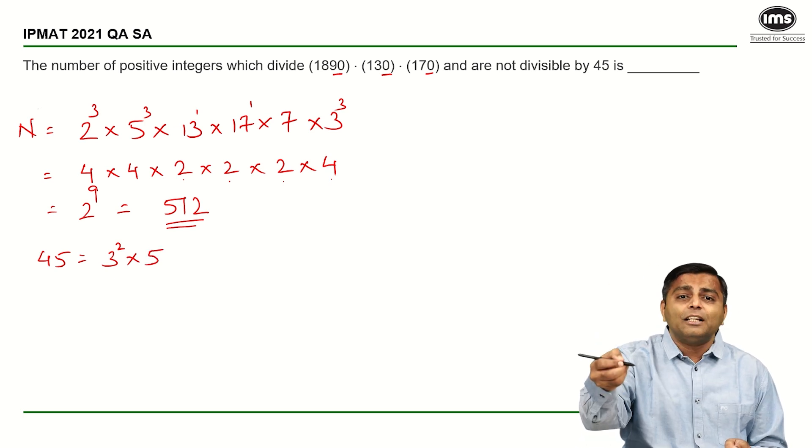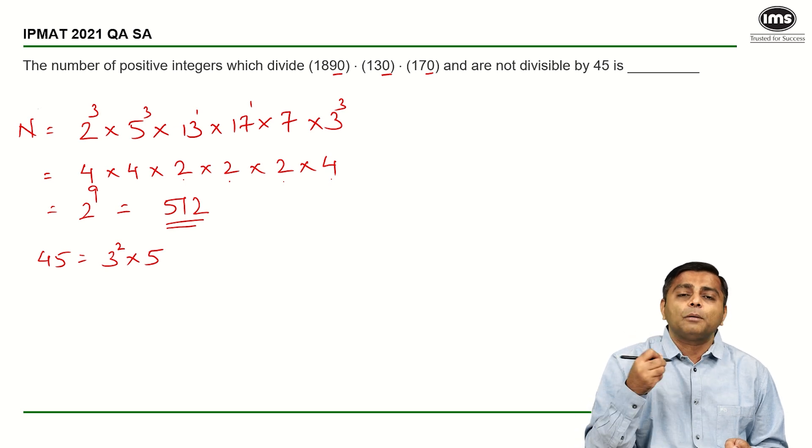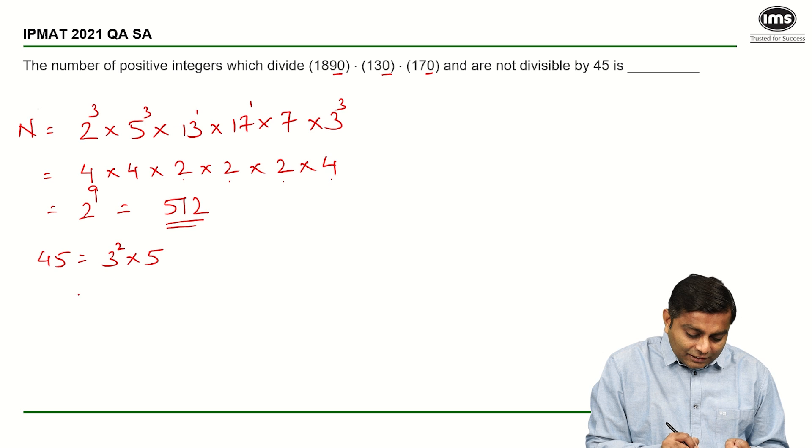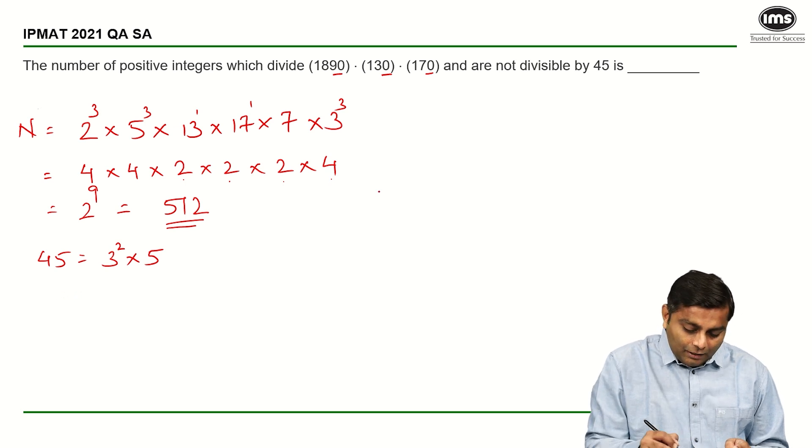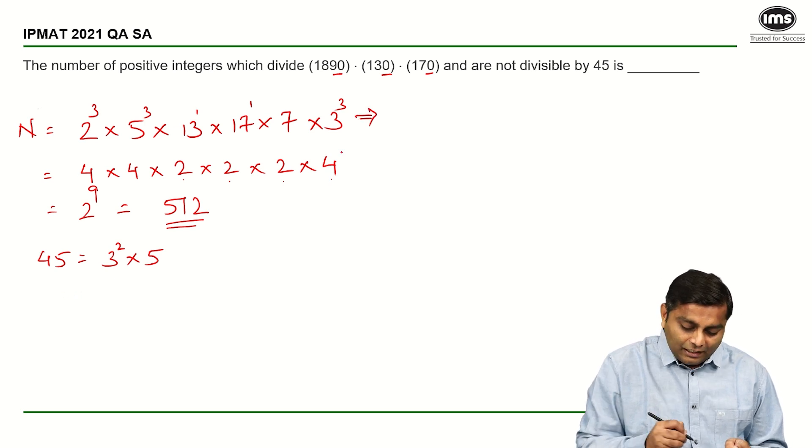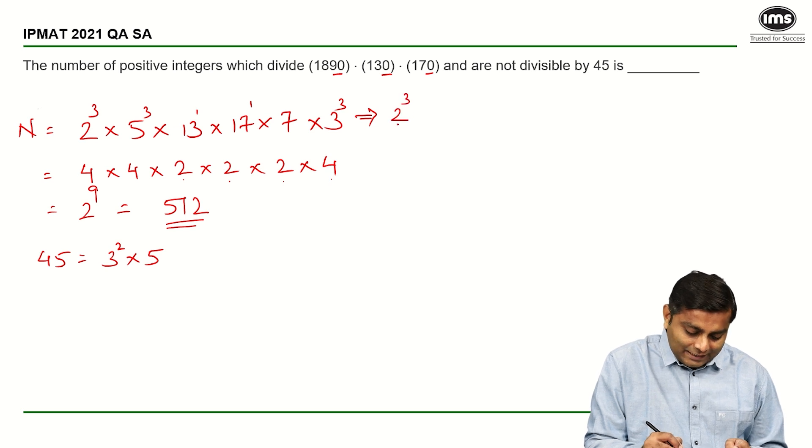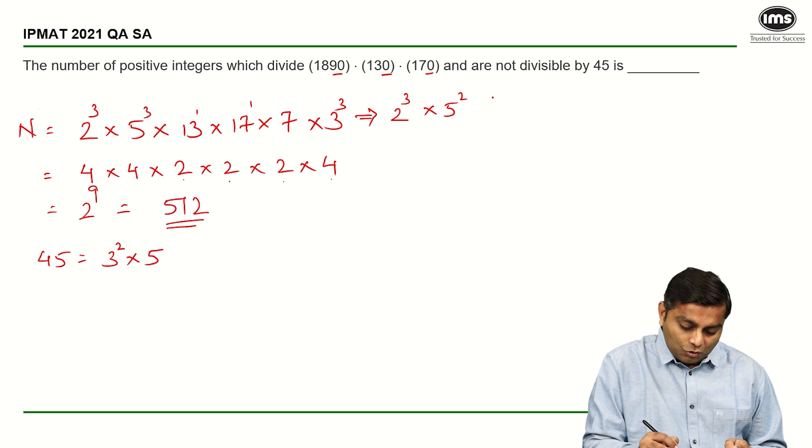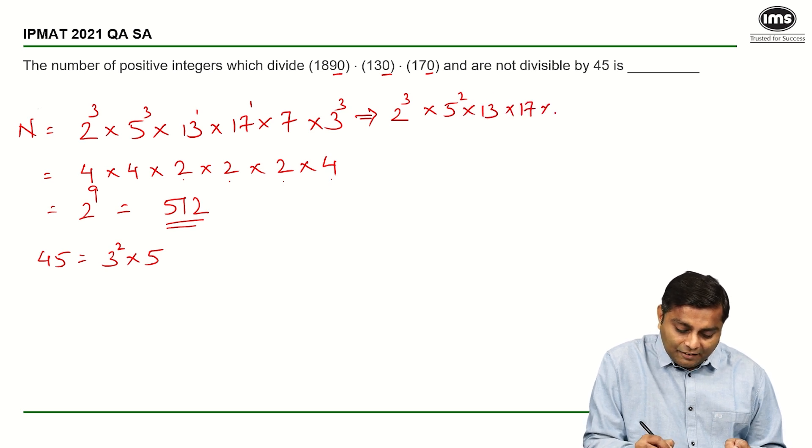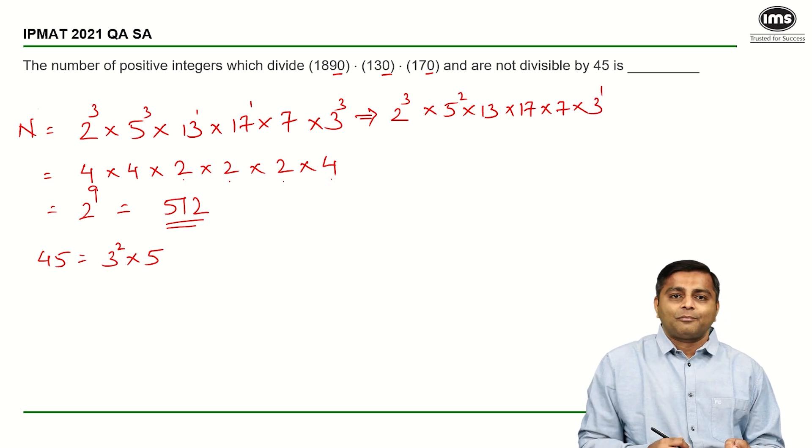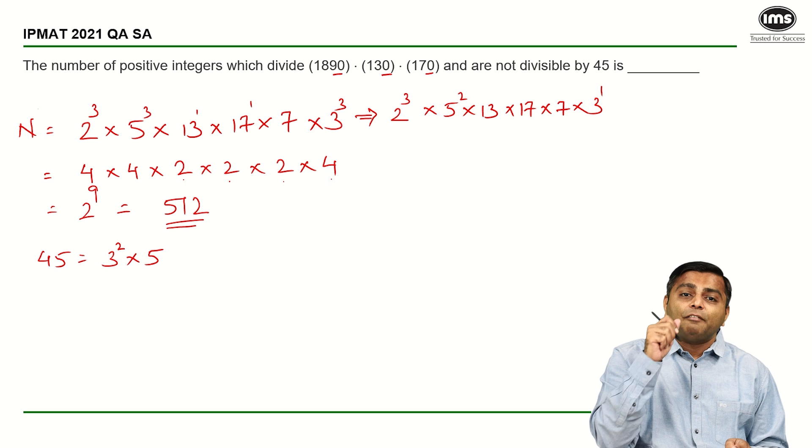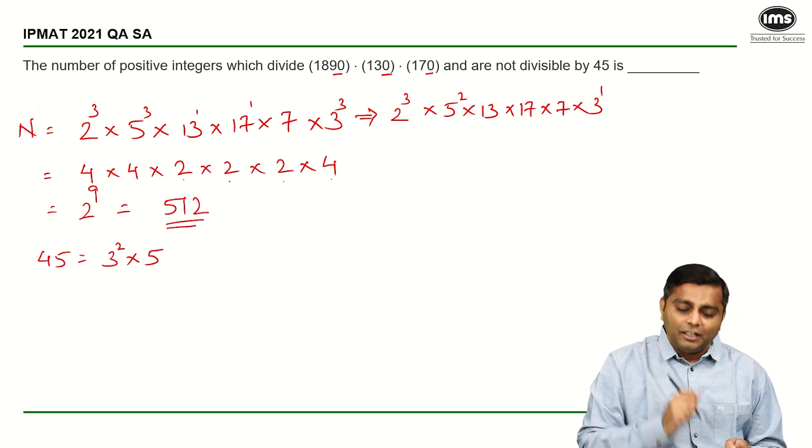From the original prime factors, we should reduce the powers of 3 by 2 and powers of 5 by 1. So if I just rewrite that whole thing again. If I just rewrite this thing again, what I am going to get? 2 cube stays as it is, 5 becomes a square, 5 the power of 5 now becomes a square, 13 stays as it is, 17 stays as it is, 7 stays as it is and 3 now becomes only power 1. So this is the form which when n is divided by 45, we get this.